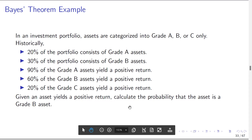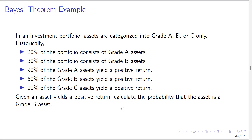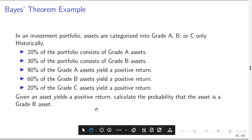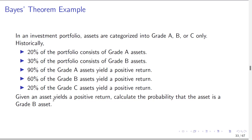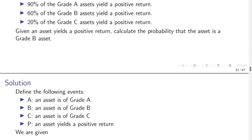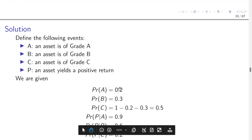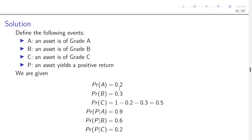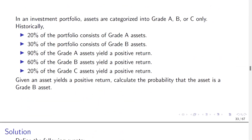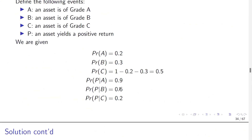Let A represent grade A assets, B for grade B assets, C for grade C assets, and P represent a positive return. We want to find the probability that an asset is grade B given that it yields a positive return. The word 'given' indicates conditional probability. The probabilities provided are: P(A) = 0.2, P(B) = 0.3, and since the portfolio is made up of just these three asset types, P(C) = 1 − 0.2 − 0.3 = 0.5.